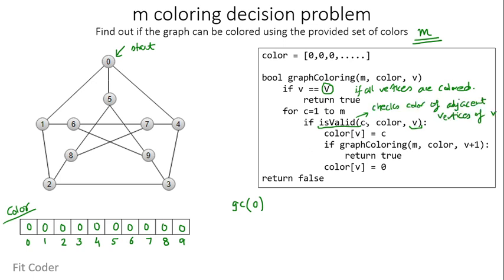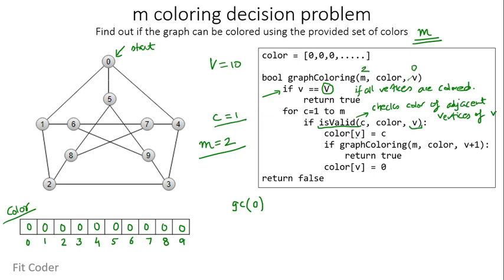Let's do a dry run with M equal to 2, checking whether the graph can be colored with two colors. We invoke graph coloring with M=2, color all zeros, and vertex V=0. V is 0 and capital V is 10, so the base condition is false. For C=1, isValid returns true since no vertices are colored, so color[0] = 1.